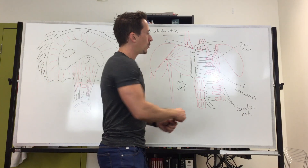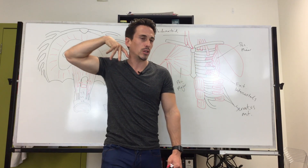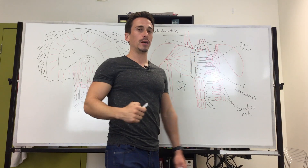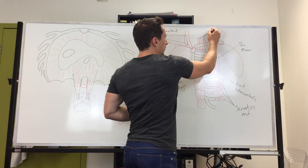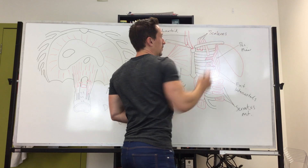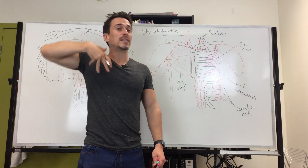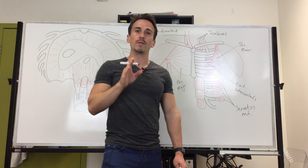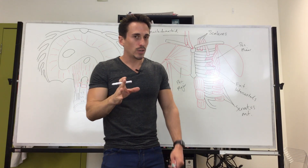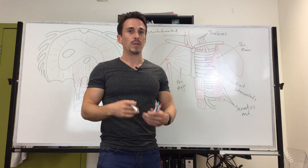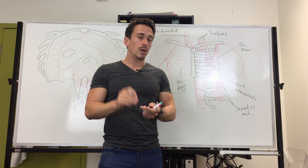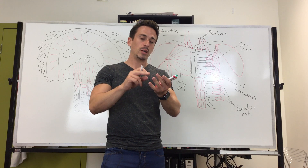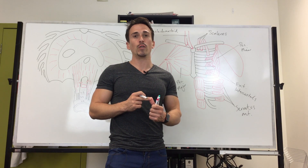Sitting next to and behind the sternocleidomastoid are the scalene muscles — anterior, middle, and posterior scalenes. These attach to the first and second ribs; contracting them lifts the ribs, increasing thoracic volume. In summary: quiet inspiration uses the diaphragm and external intercostals. Forced inspiration additionally recruits the pectoralis major and minor, serratus anterior, sternocleidomastoid, and scalenes.